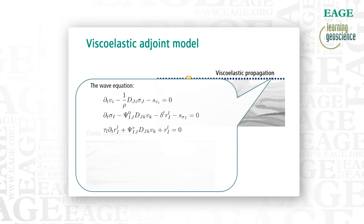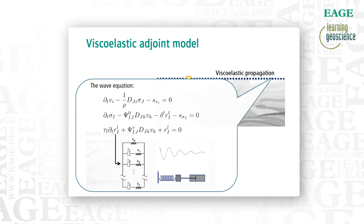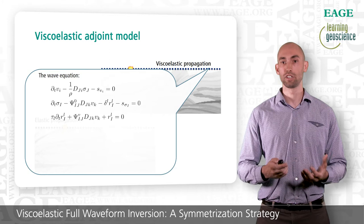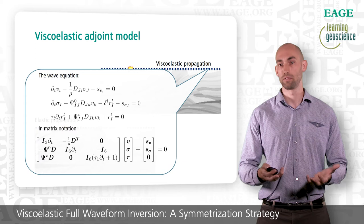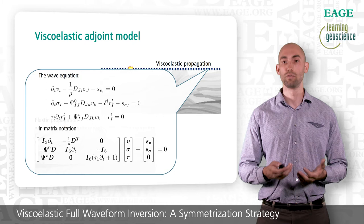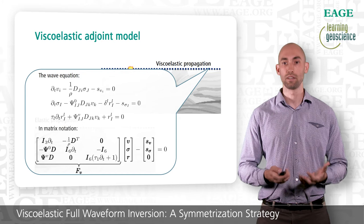We use the viscoelastic wave equation in the time domain in the velocity-stress formulation. We want to solve the particle velocities v and the stress sigma given by the first two equations. To implement attenuation, we use memory variables denoted as R. This equation is based on the generalized standard linear solid, in which the Earth is represented as a superposition of dashpots and springs in parallel. This model allows us to obtain a more or less arbitrary attenuation profile in frequency. To derive the adjoint equation, we rewrite the set of equations in matrix notation, giving us this form.